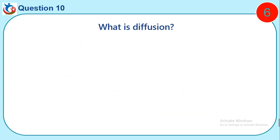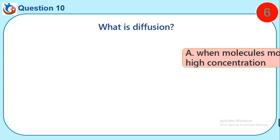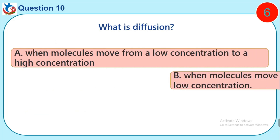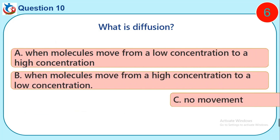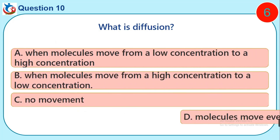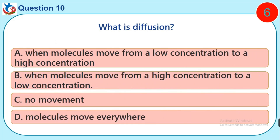Question 10. What is diffusion? A. When molecules move from a low concentration to a high concentration. B. When molecules move from a high concentration to a low concentration. C. No movement. D. Molecules move everywhere.